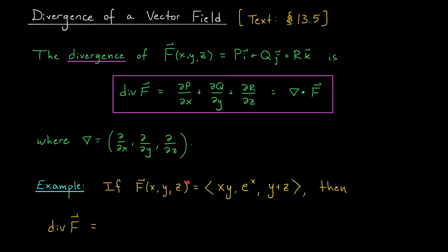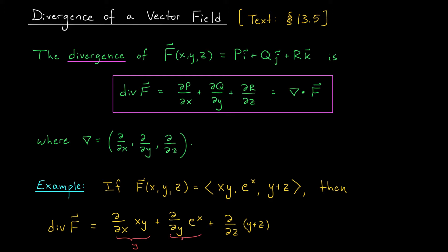If we have a function f of x, y, z given by (xy, e to the x, y plus z), then according to our definition, the divergence is going to be the partial derivative with respect to x of xy, plus the partial derivative with respect to y of e to the x, plus the partial derivative with respect to z of y plus z. So the partial with respect to x gives us y, the partial with respect to y gives us zero, and the partial with respect to z gives us one. We have a divergence of y plus one.